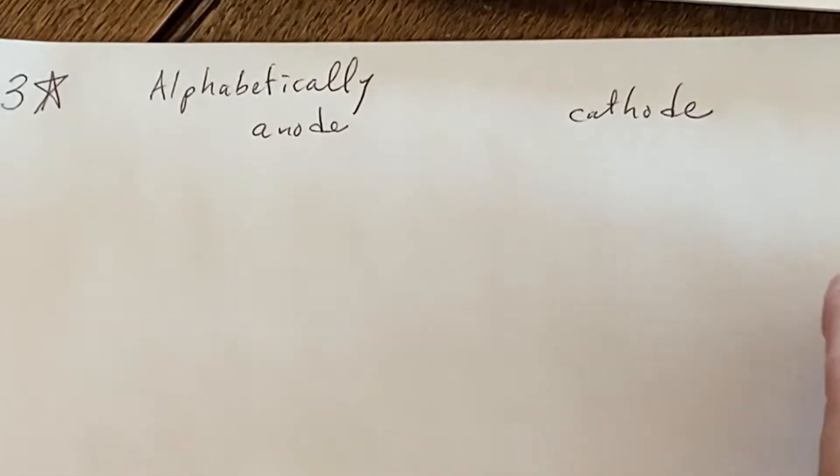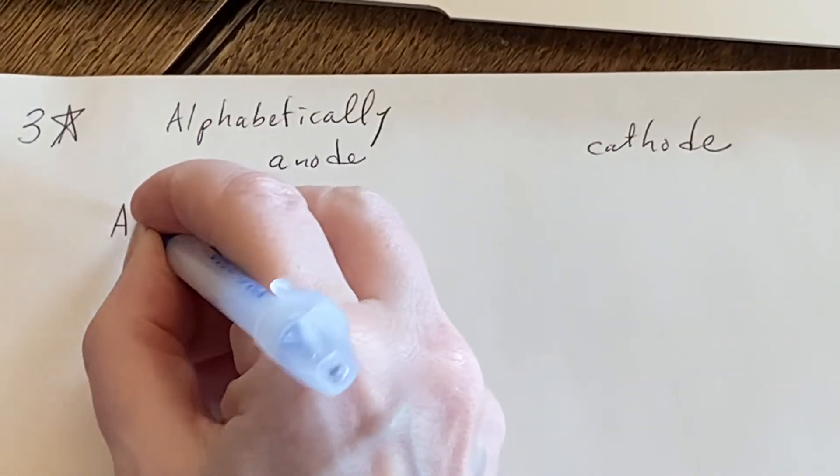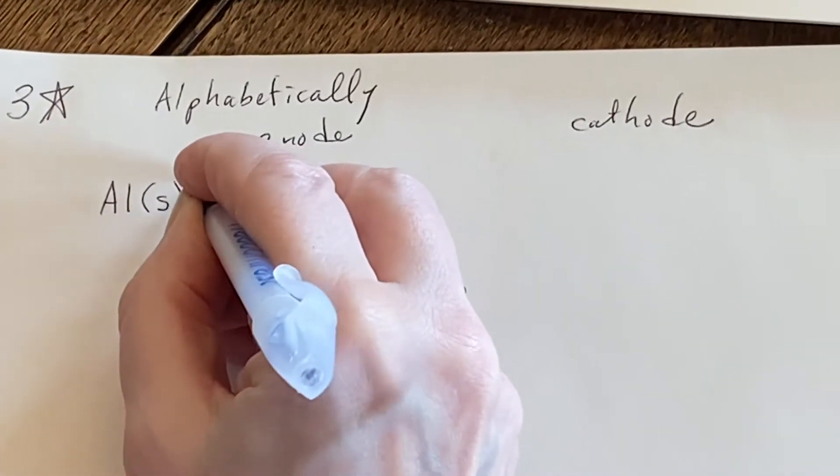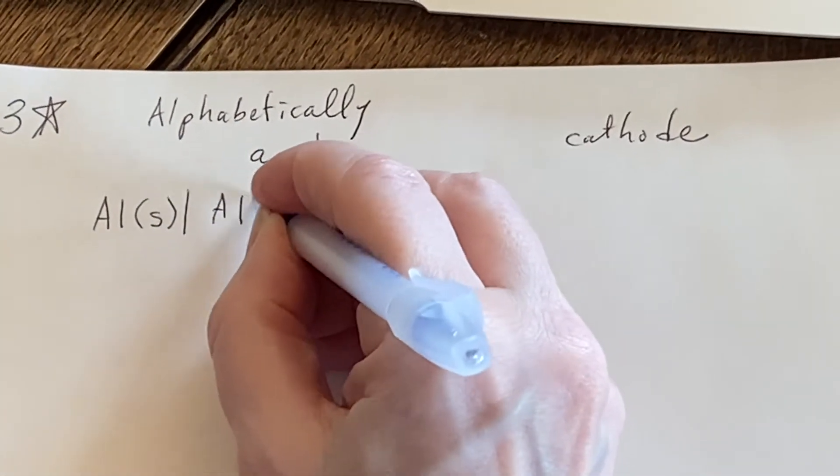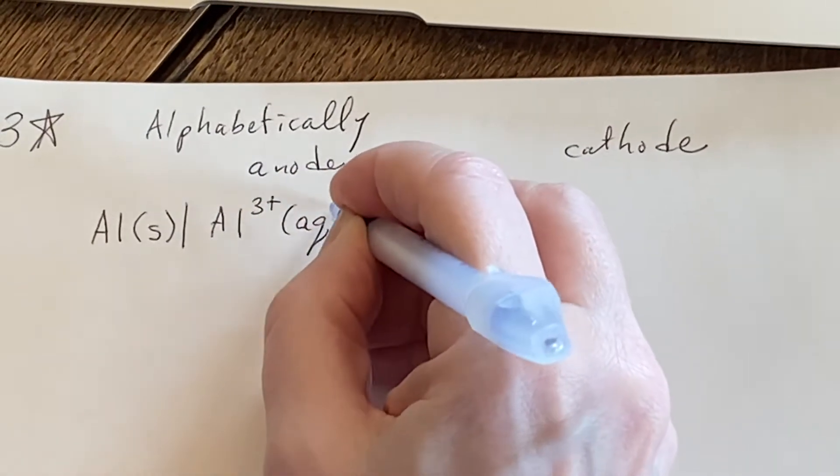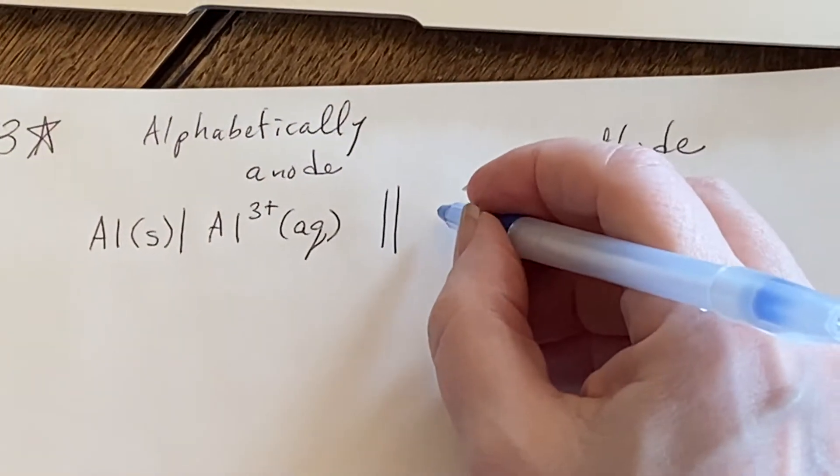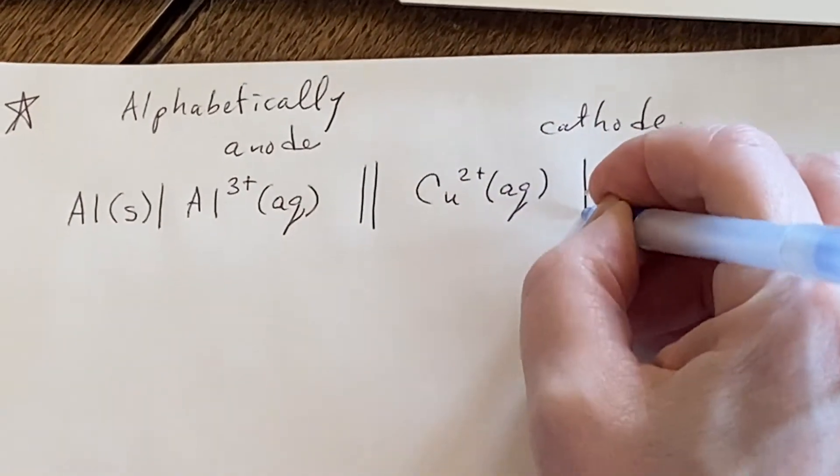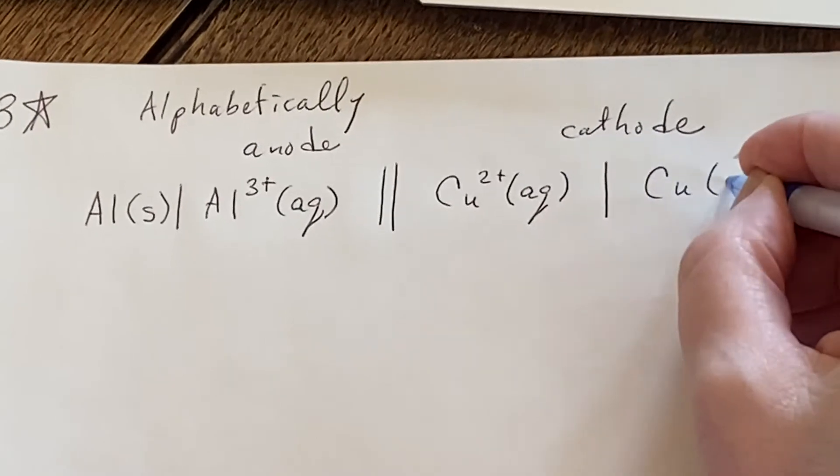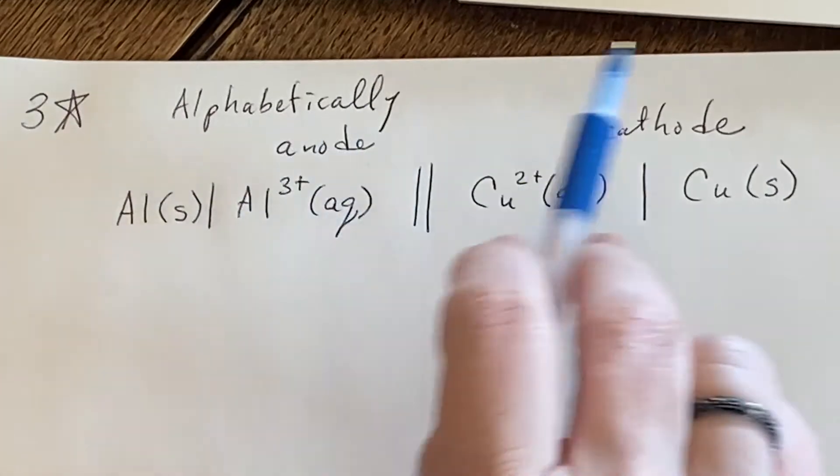They told us that it was the aluminum that was the anode. So an aluminum anode. So it is a solid and it is in a solution that has aluminum plus three ions. And then on the other side, we're going to have a solution of copper plus two ions. And the cathode is going to be solid copper. There we go. We've written it out. We're reminding ourselves this side's anode, this side's cathode.